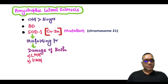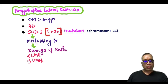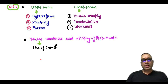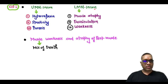Because of this mutation there will be a misfolding of the protein, and this will cause damage of the motor neurons — both lower motor neurons and upper motor neurons. In this disorder you will find the symptoms and signs of both upper motor neuron lesion and lower motor neuron lesion.